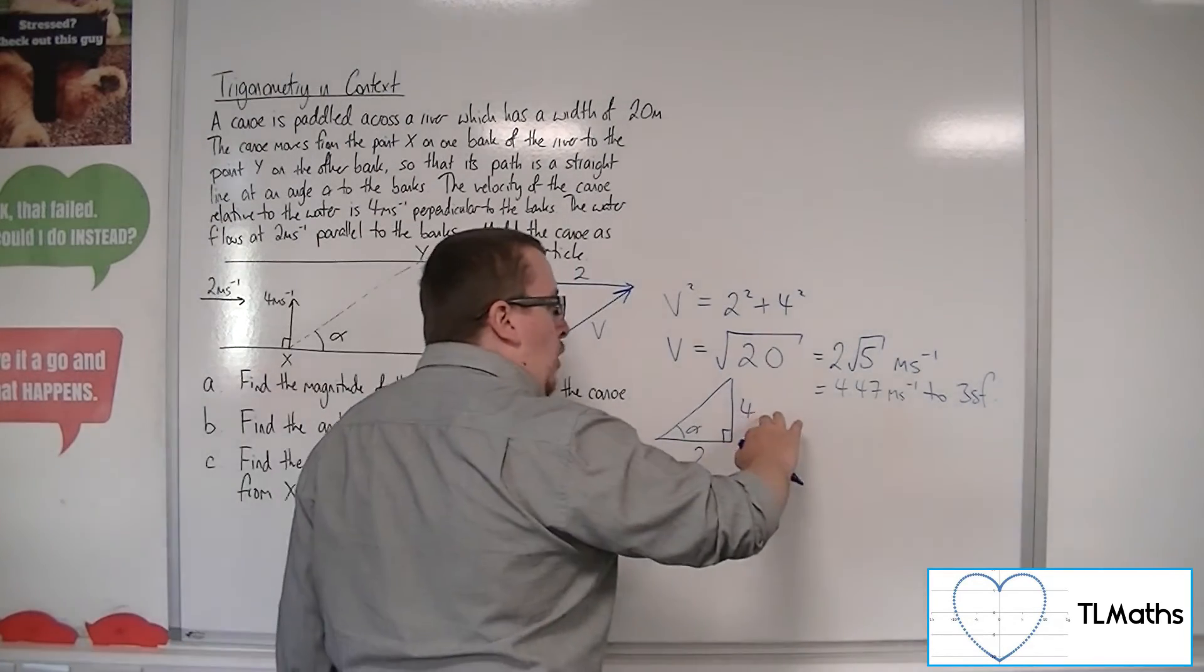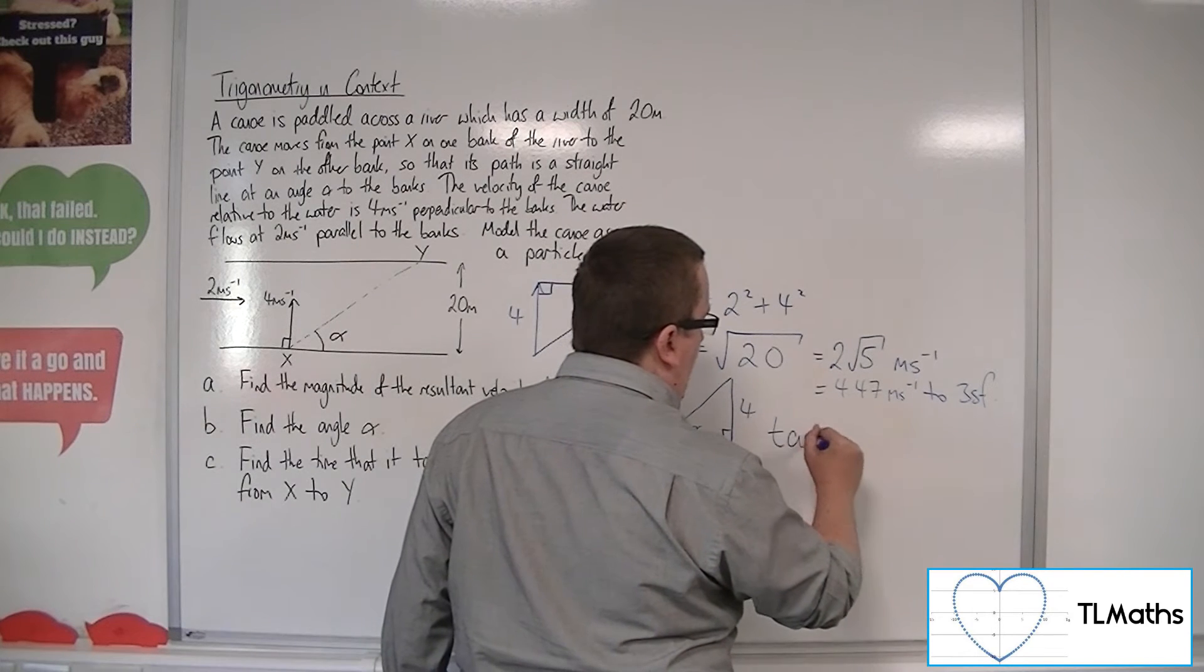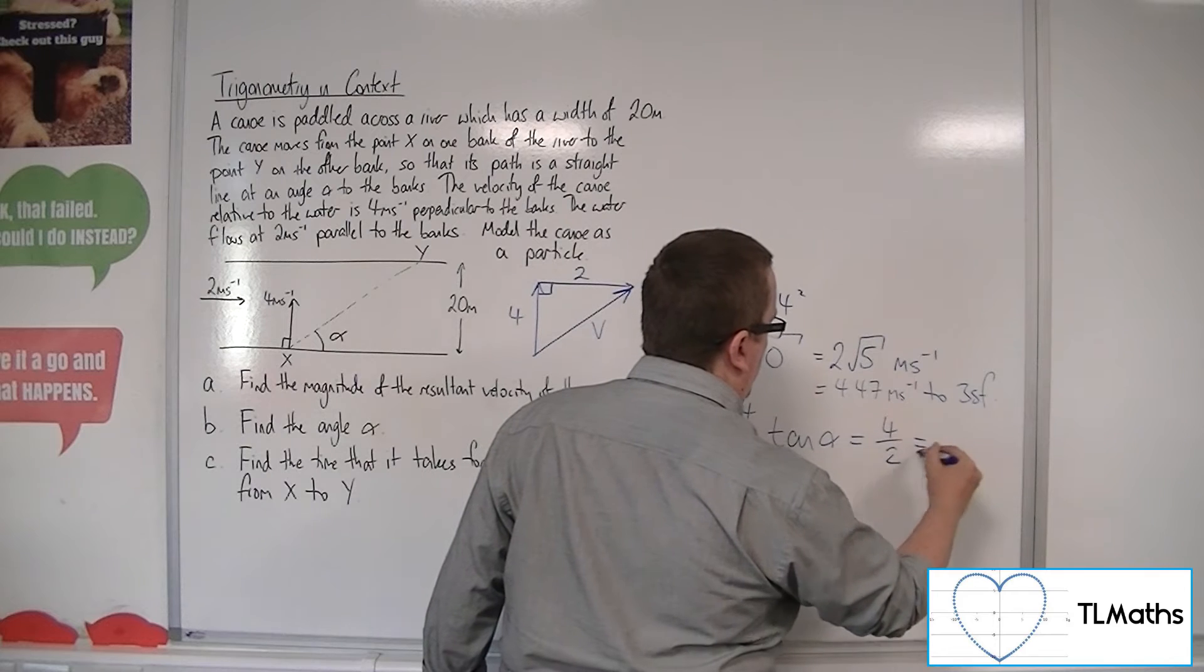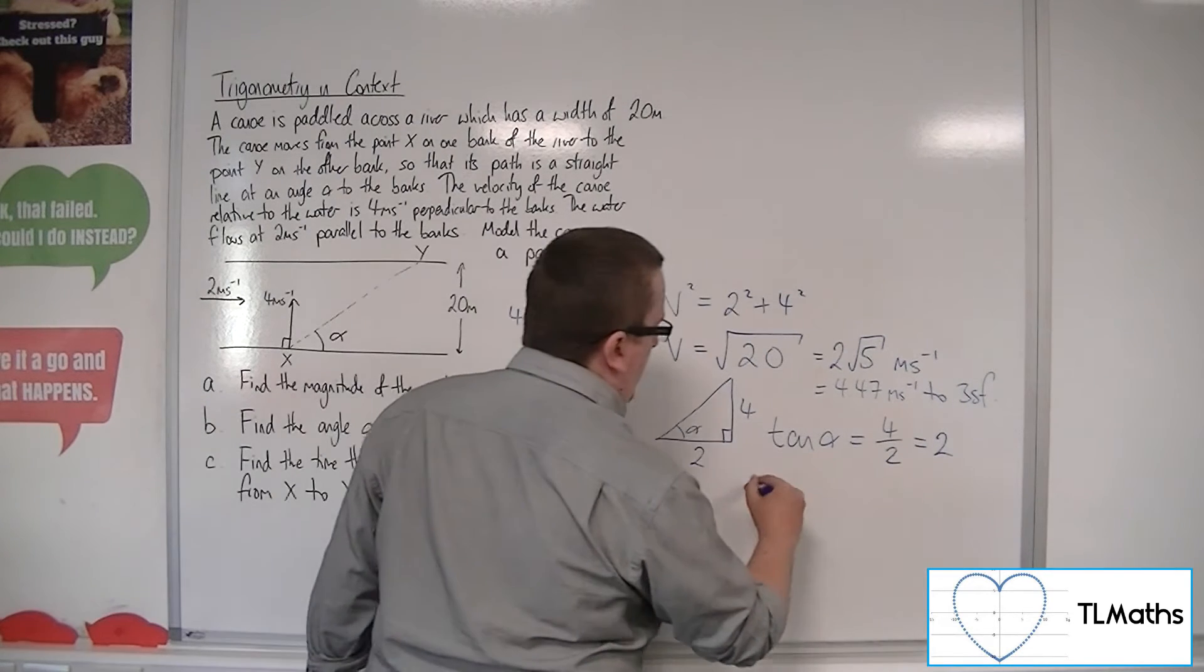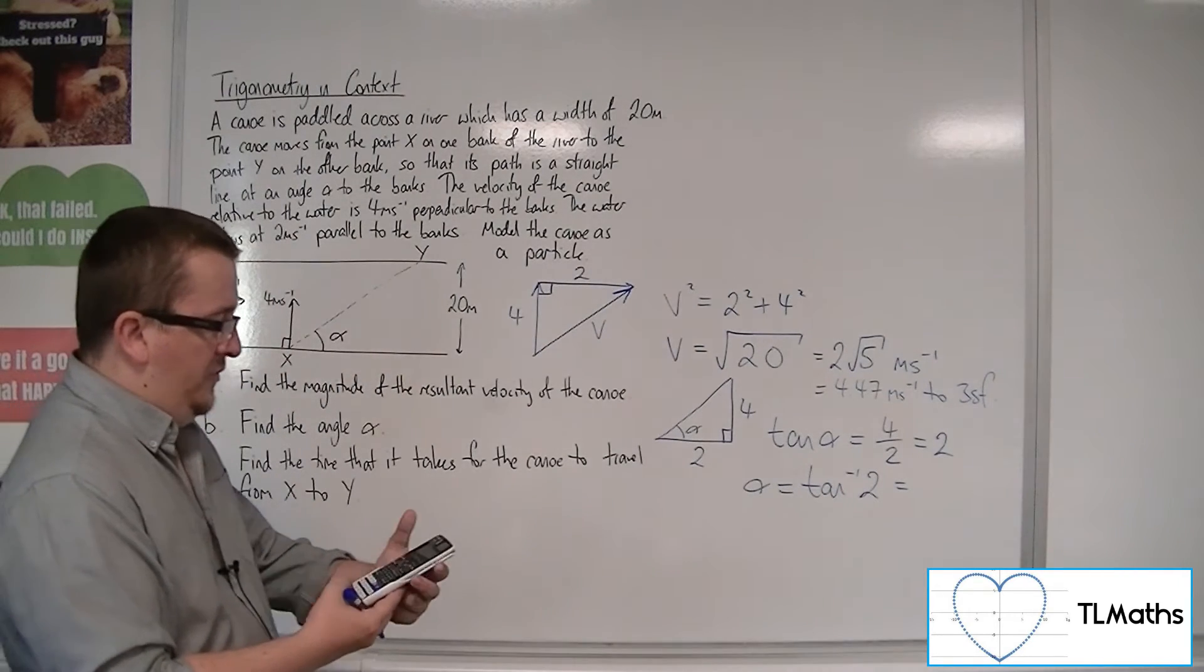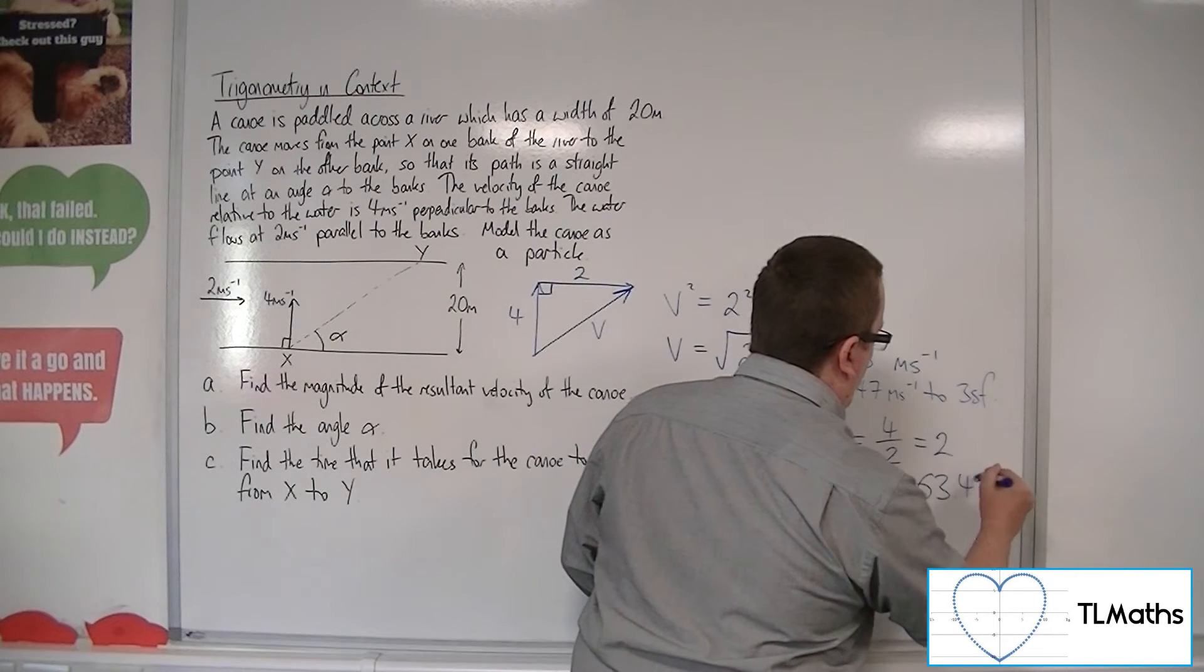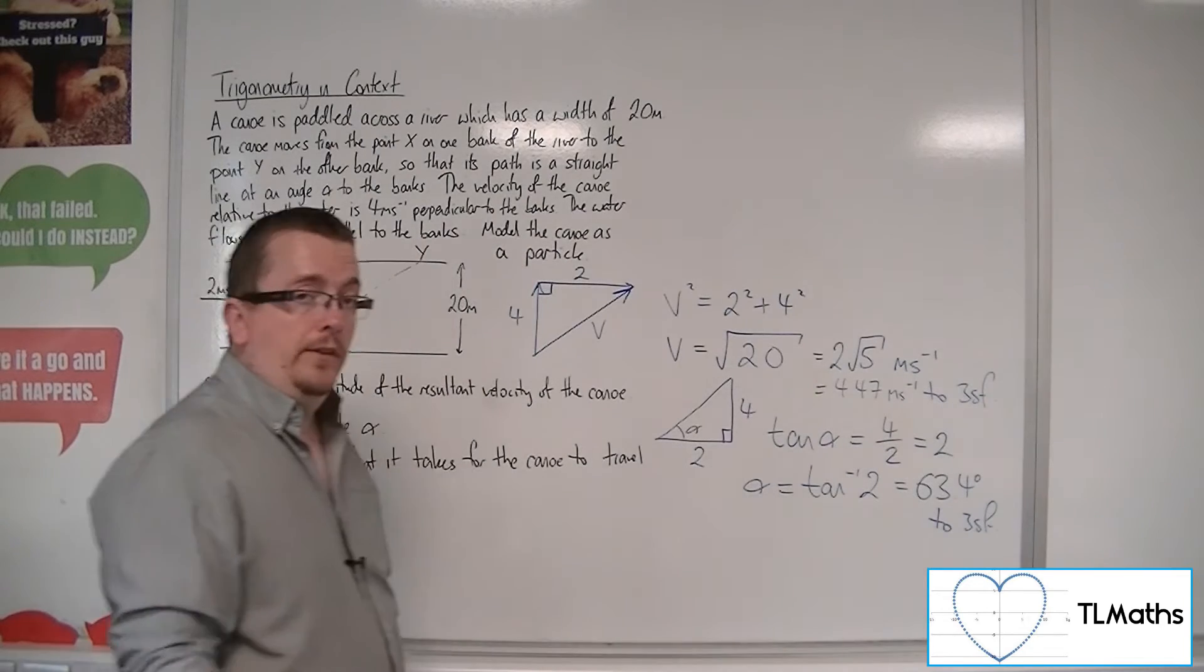Because we have the opposite and adjacent to the right-angled triangle. So tan of alpha is equal to 4 over 2, the opposite over the adjacent, so just 2. So that means we can have alpha being the inverse tan of 2. So inverse tan of 2, or arctan, is 63.4 degrees to 3 significant figures.